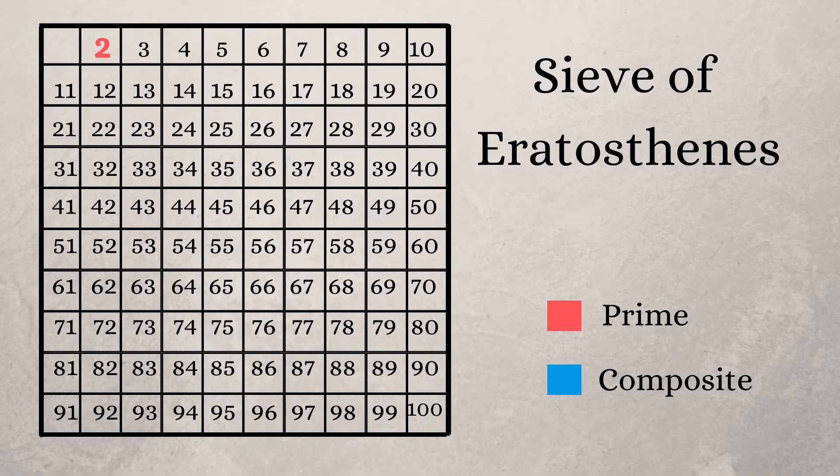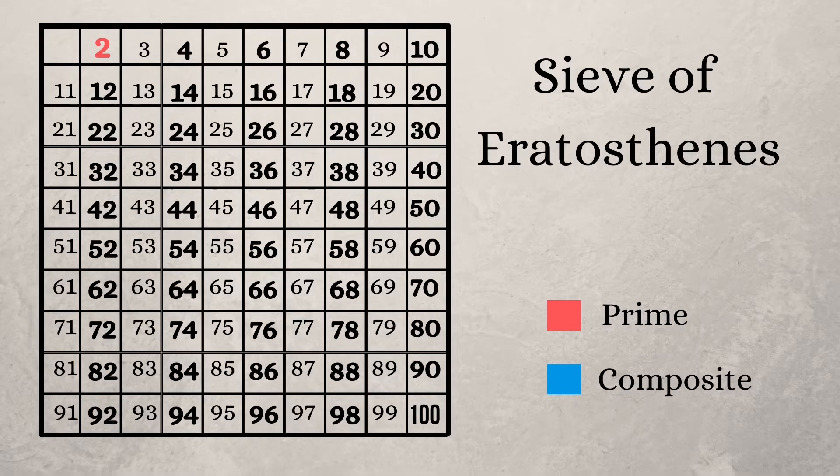Mark it as a prime number since it has only two factors, which is one and two. Now find out the multiples of two, which are four, six, eight, and so on.